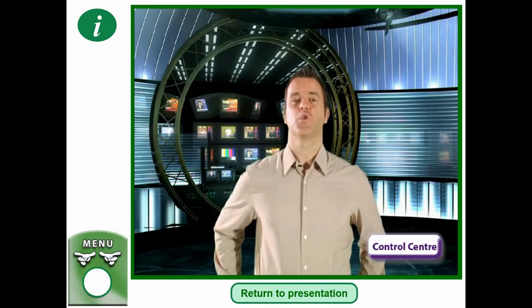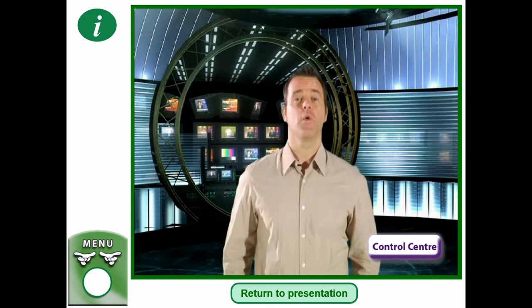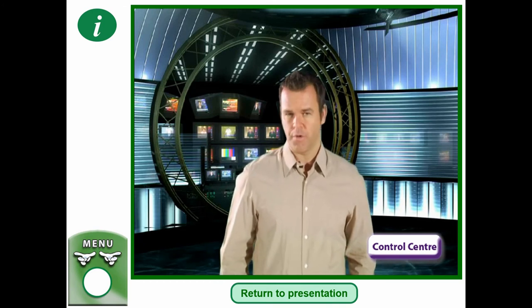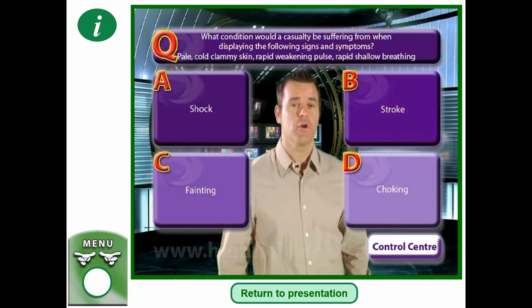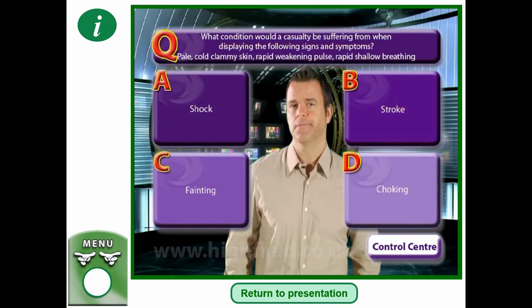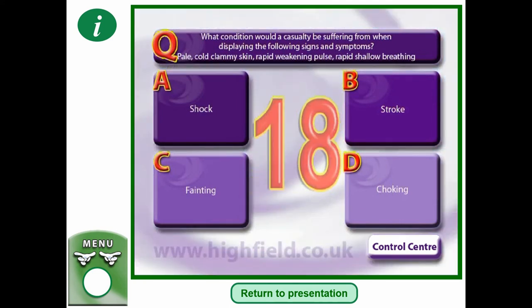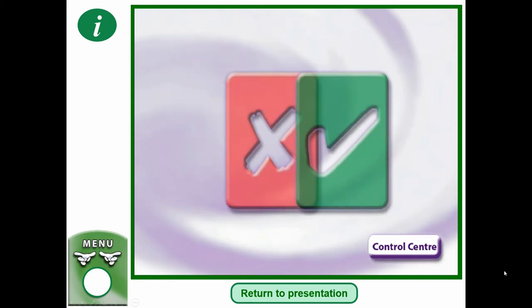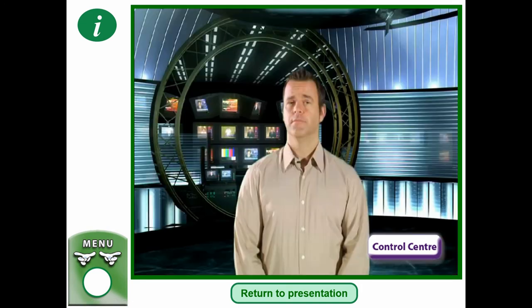Quiz question: What condition would a casualty be suffering from when displaying pale, cold, clammy skin, a rapid weakening pulse, and rapid shallow breathing? Is it A — shock, B — stroke, C — fainting, or D — choking? Pause the video and decide. The correct answer is shock.